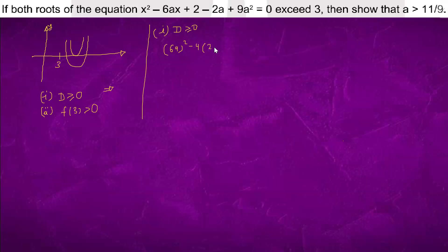After simplifying b² - 4ac ≥ 0, terms cancel and we get (a - 1) × 8 ≥ 0, which gives us a ≥ 1.